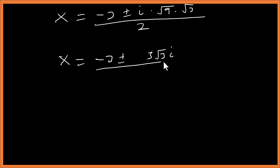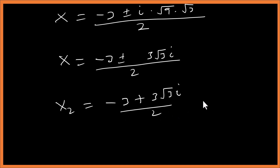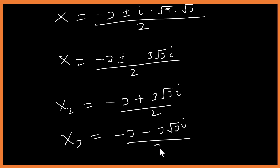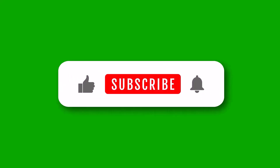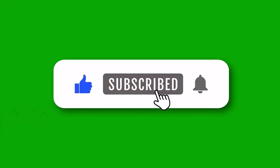So our three solutions are: x₁ equals 3, x₂ equals (minus 3 plus 3i root 3) over 2, and x₃ equals (minus 3 minus 3i root 3) over 2. Thanks for watching.